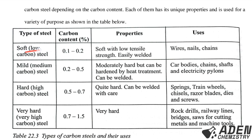Soft steel has a low carbon content of 0.1–0.2%. Its properties: soft with low tensile strength and easily welded. Uses: making wires, nails, and chains. Mild steel has 0.2–0.5% carbon content. Properties: moderately hard but can be hardened by heat treatment and can be welded. Uses: car bodies, chains, shafts, and electricity pylons.